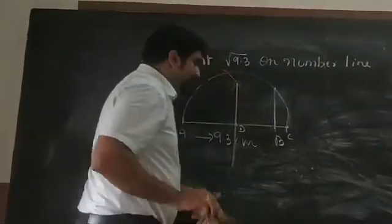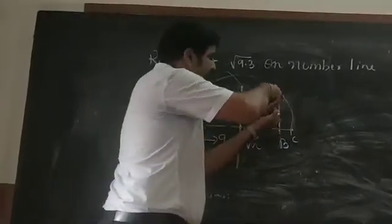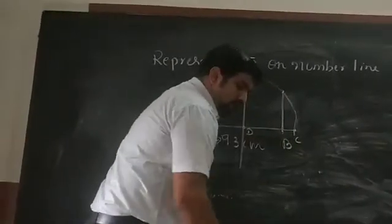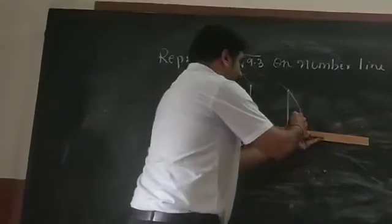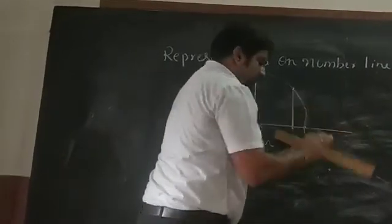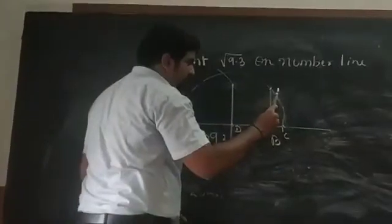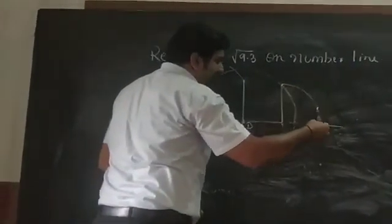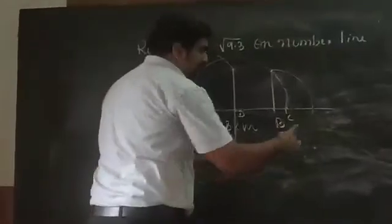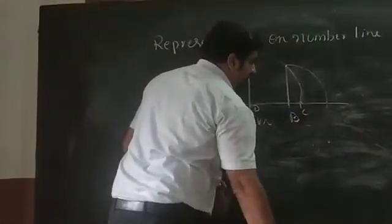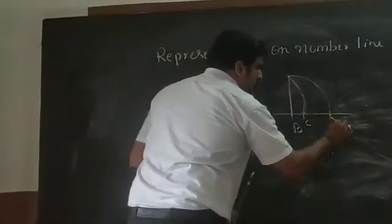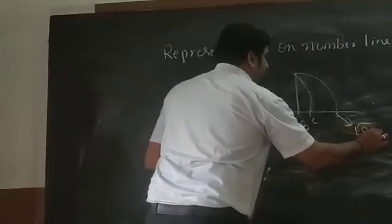take this distance. And keep it. Now, whatever length you took, keep it in this point and draw one arc like this. So we should cut here at this point. So this will be my root 9.3 point.